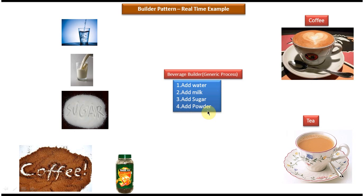So based on the beverage we are planning to prepare, using this generic process I can prepare any beverage like coffee, tea, Horlicks, or Bournvita. Only thing is, all beverage preparation follows the same generic process.